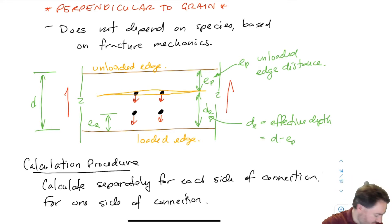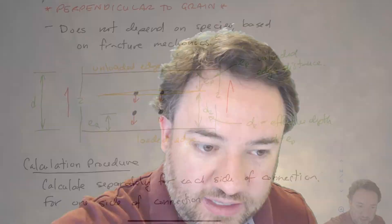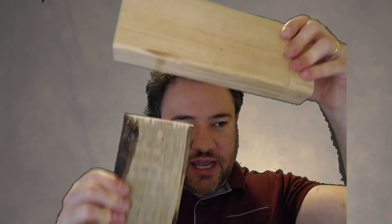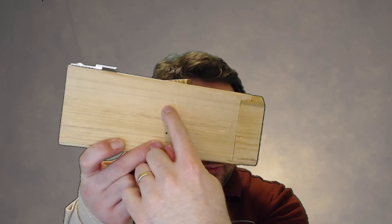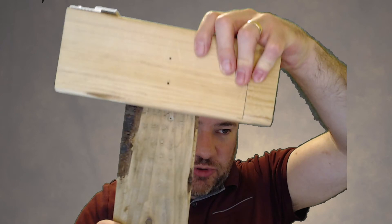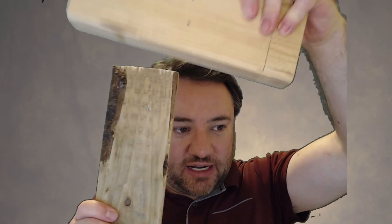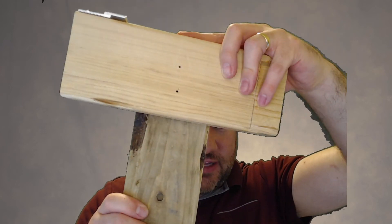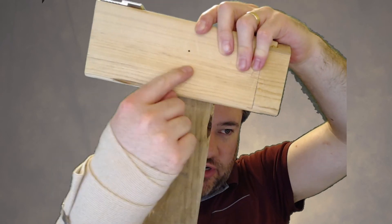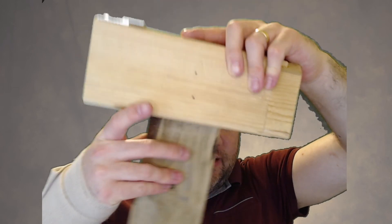Just like when we talked about row shear, group tearout, and net area, we only calculate for one side of the connection. When talking about perpendicular-to-grain load, this makes even more sense. If I have a member hanging from another member connected with two bolts, this member is hanging and pulling down. For the horizontal member, the bolts want to pull down and split it apart — so for that side of the connection, I calculate the splitting failure mode.